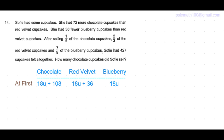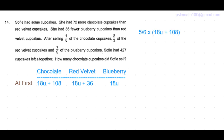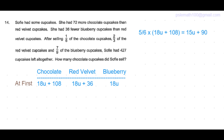After selling one sixth of the chocolate cupcakes, five sixths were left. Five sixths of (18 units + 108) equals five sixths of 18 units, which is 15 units, plus five sixths of 108, which is 90. So that's 15 units plus 90.